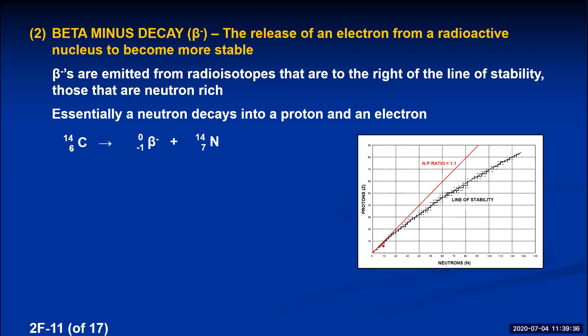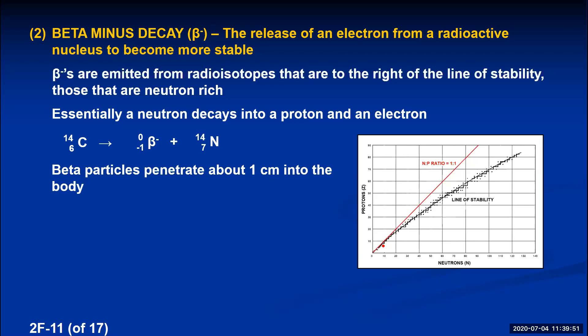Beta minus particles are much lighter than helium nuclei, making them more energetic and penetrating. If exposed to a beta-emitting radioactive source, beta particles can penetrate about one centimeter into the body of a living organism.